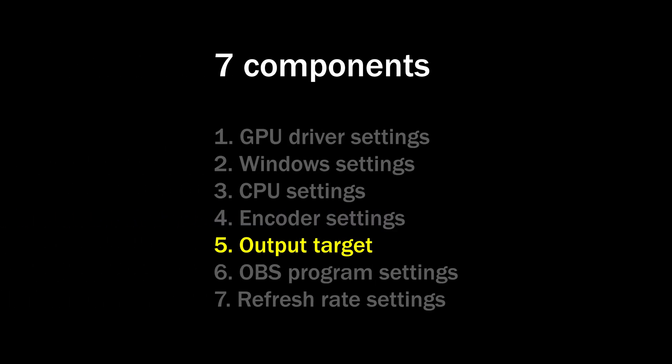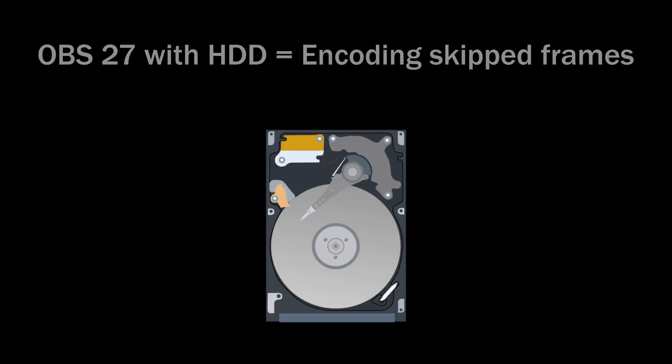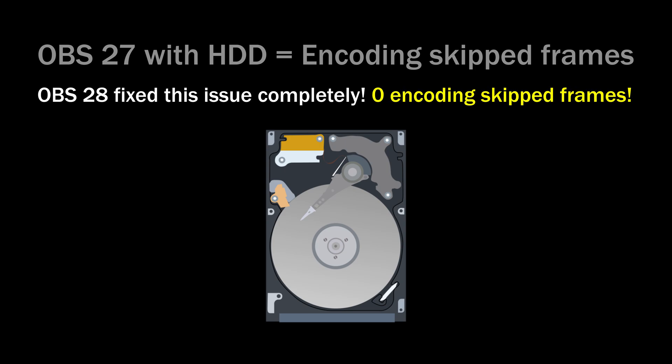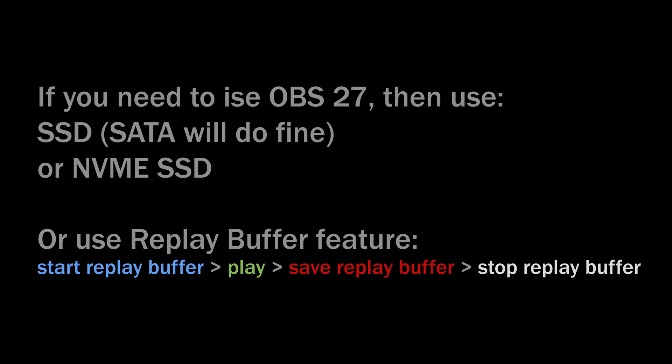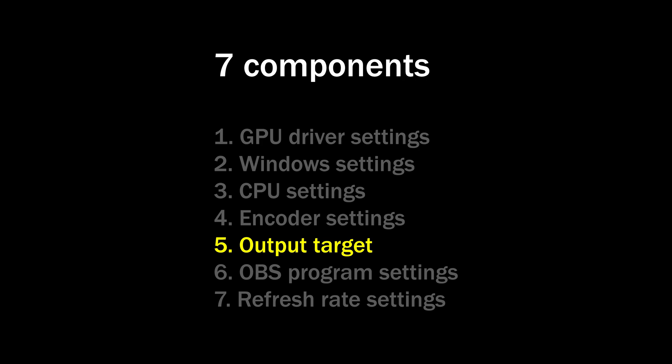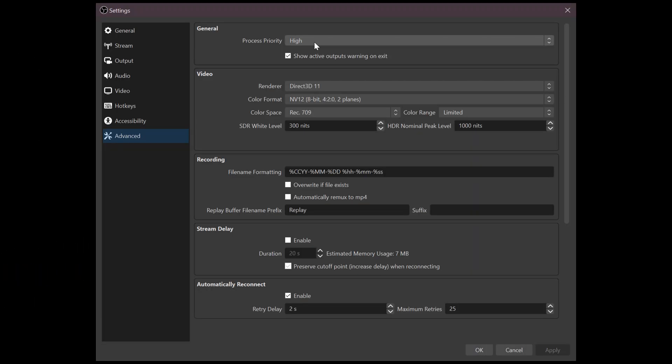Number five: the output target. If you record gameplay to a hard drive, there is a bug in OBS 27 and older that can cause encoding to skip frames randomly, causing micro stutters. This has been completely fixed in OBS 28, so please update if possible. If you must use OBS 27 for compatibility reasons, change your output path to a faster SSD or NVMe drive. You can also work around this by using the replay buffer feature if you do not own an SSD — start the replay buffer, save it, then turn it back off. The downside is it will consume some RAM during recording.